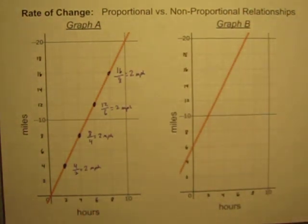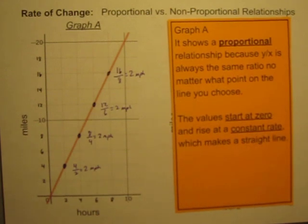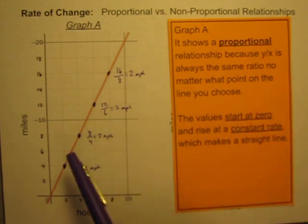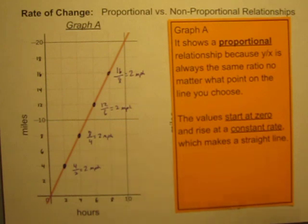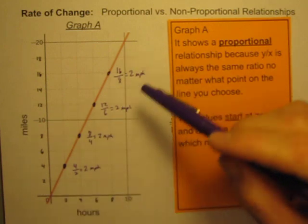So, this is a proportional relationship. And calculating the rate of change is quite easy. It's a proportional relationship because when you divide y divided by x for any point on the line, you always get the same ratio, no matter what point you choose.